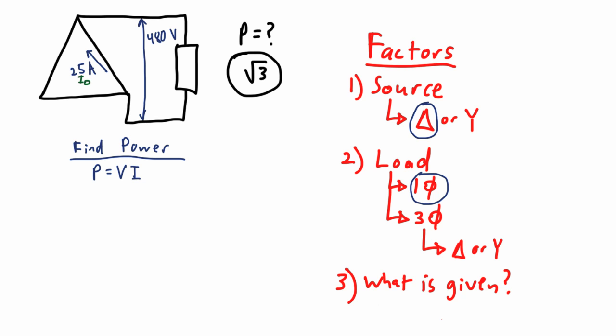When the line and phase values are different, moving from phase to line requires multiplying by root 3. Moving from line to phase requires dividing by root 3. This is because the line value is greater than the phase value.